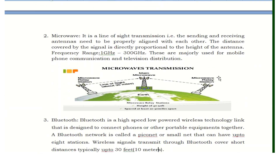The next type is microwave. Microwave is a line-of-sight transmission, meaning the sending and receiving antennas need to be properly aligned with each other. The distance covered by the signal is directly proportional to the height of the antenna. The frequency range is 1 GHz to 300 GHz. Microwaves are majorly used for mobile phone communication, telephone, and television distribution.